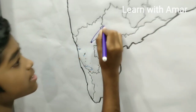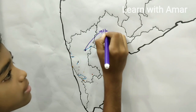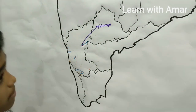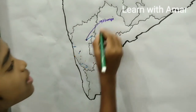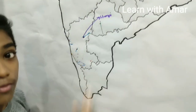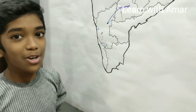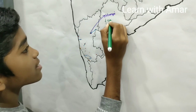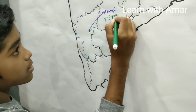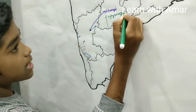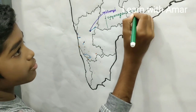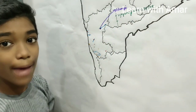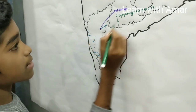It is Hampi. Hampi was the capital city of the Vijayanagara Empire. It is situated on the banks of river Tungabhadra.